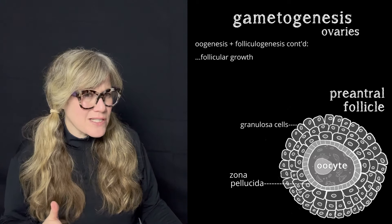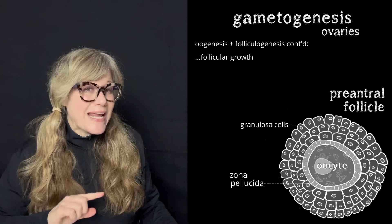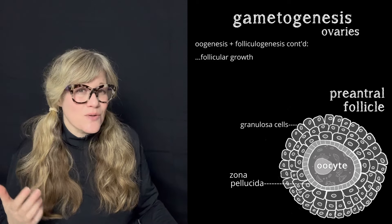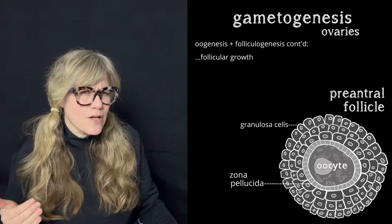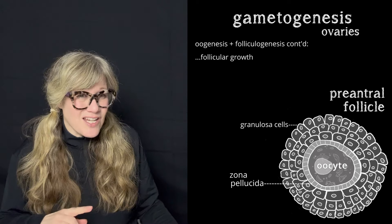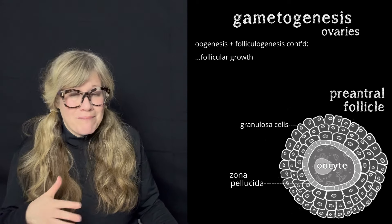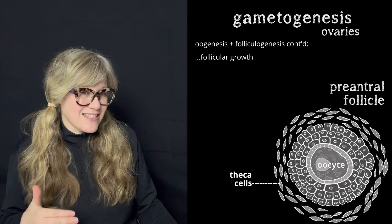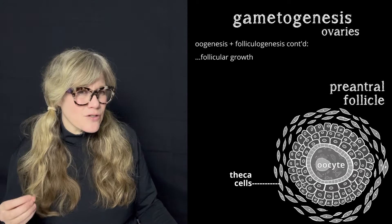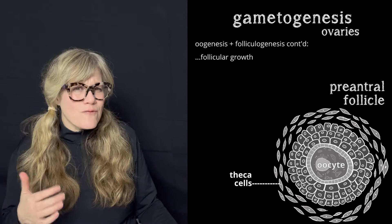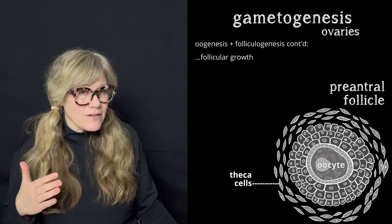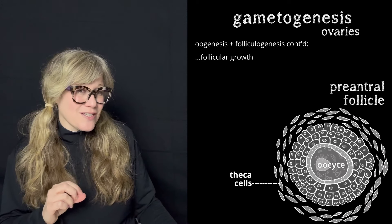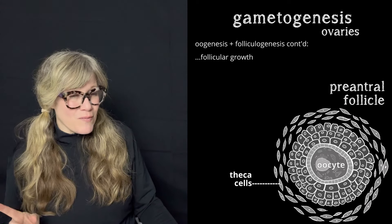Pre-antral will make more sense in a minute. During the pre-antral stage, the granulosa cells continue to divide and as they do, they develop follicle-stimulating hormone receptors. Also during this stage, the oocyte secretes more GDF9 to recruit support cells called theca cells, which are a kind of interstitial cell that form the outermost layer of the follicle. There, they differentiate into two types of theca interstitial cells with luteinizing hormone receptors.